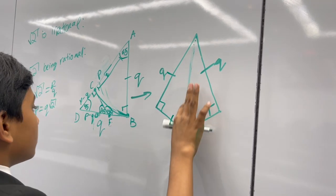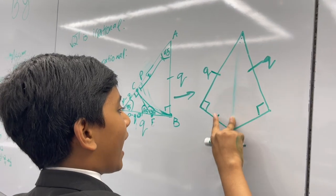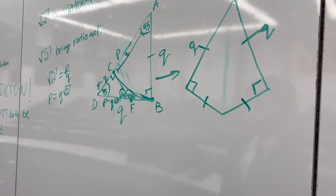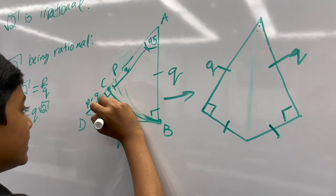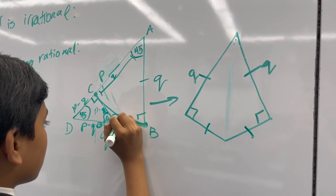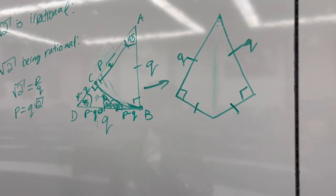af basically cuts our kite in half. So that means that these two sides are congruent too. This is p minus q. And this has to be p minus q.